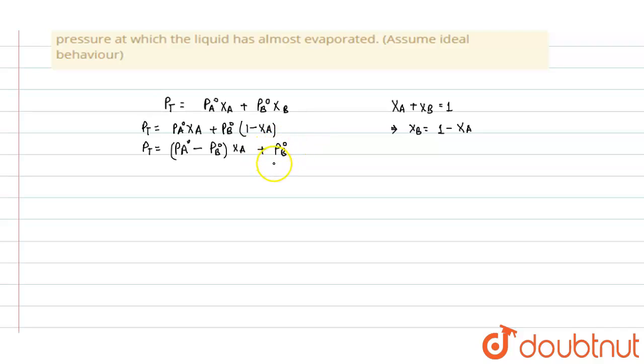plus P_B°. So this is the expression of your total pressure. Now see, by this relation P_t × Y_A = P_A° X_A, where Y_A is the mole fraction of A in vapor phase, while X_A is the mole fraction of A in liquid phase.